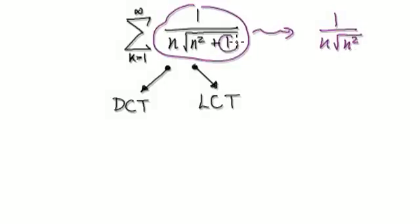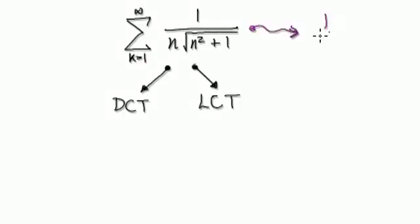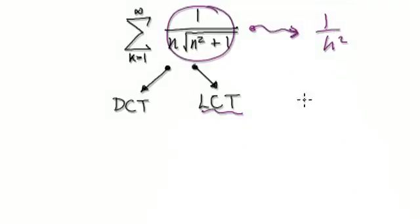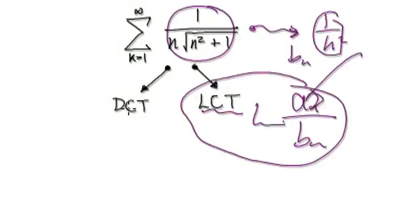You can pretty much ignore the negligible 1, because as n heads towards infinity, this 1 is going to be next to nothing. So you can consider it as just n times n under the square root, which would be 1 over n squared. So as n heads towards infinity, this thing will act as 1 over n squared. The limit comparison test is when you set this to be a_n, set this to be b_n, get a_n divided by b_n, and work out the limit.